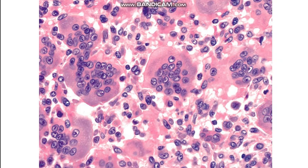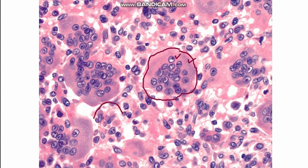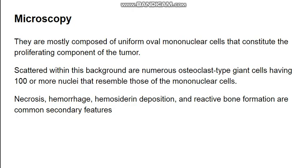Microscopically, the picture is very characteristic, which is why the tumor is named giant cell tumor. There are beautiful multi-nucleated giant cells, which can have up to 50 to 100 nuclei. The second population consists of mononuclear cells. The nuclei of the mononuclear cells are similar in appearance to those of the multi-nucleated giant cells. These two cell populations — mononuclear and multi-nucleated — are what define the microscopic picture.